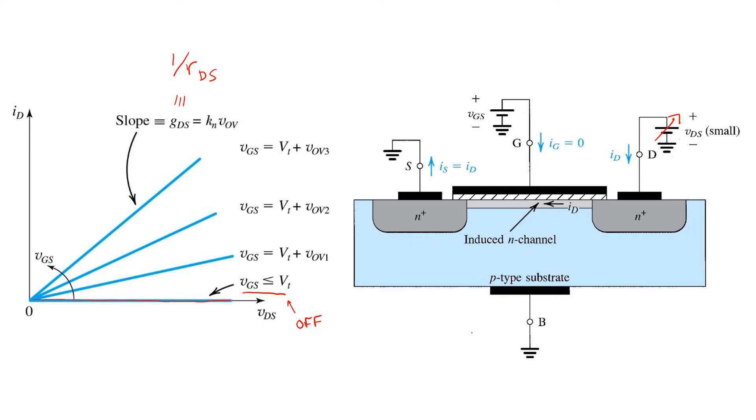You can see that with VGS held constant and VDS kept sufficiently small, the IV relationship of the MOSFET is linear, just like a resistor.